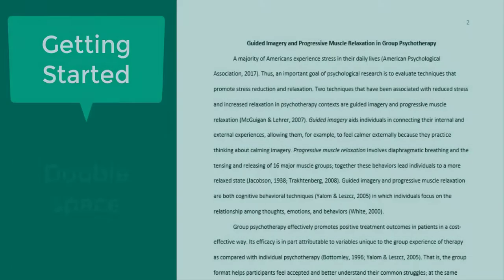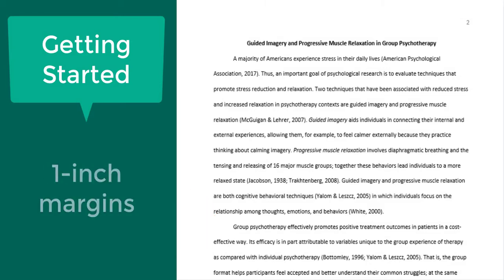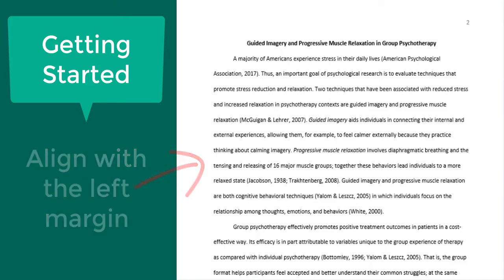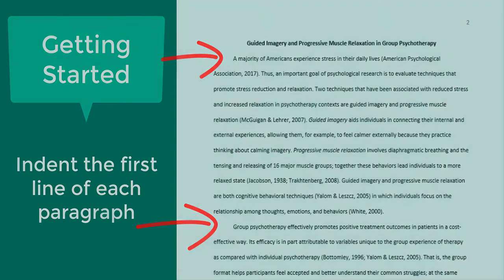In general, double-space all parts of an APA-style paper. Don't add extra space before or after paragraphs. Use 1-inch margins on every side of the page. Align the text to the left margin and leave the right margin uneven. Indent the first line of each paragraph a half inch from the left margin. This is automatically done in word processing programs, or you may use the tab key.